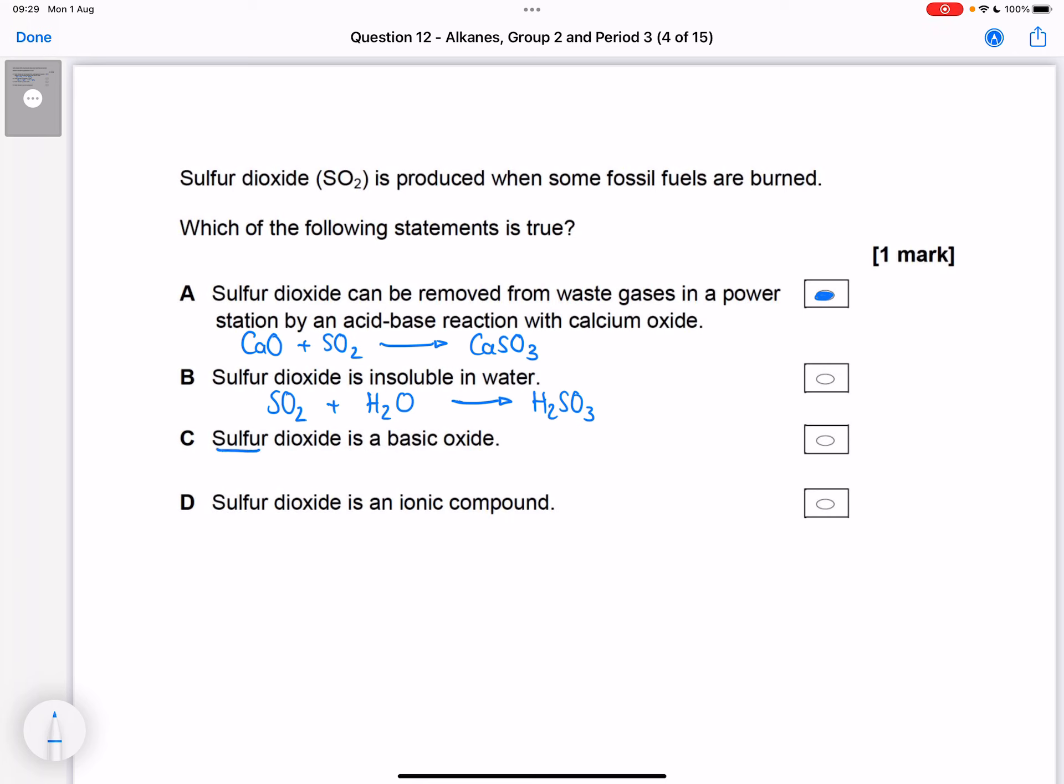So it's acidic. Also that answers this one - sulfur dioxide is basic. Non-metal oxides always make acids, metal oxides make bases. So this is incorrect.